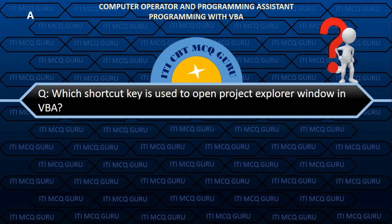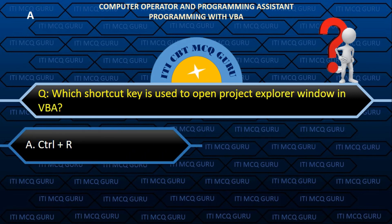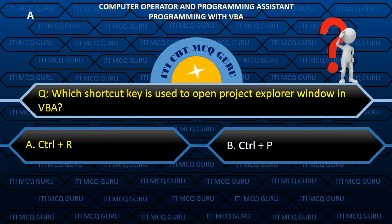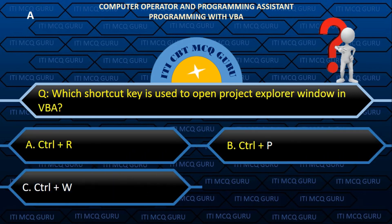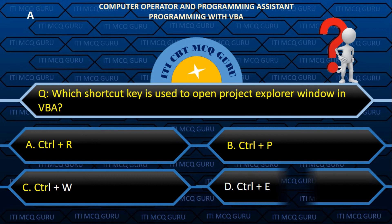Which shortcut key is used to open the project explorer window in VBA? Answer: A. Ctrl+R.